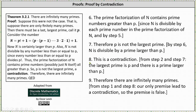Step eight: this is a contradiction from step two and step seven — the largest prime is p, and yet there is a prime larger than p. And finally, step nine: therefore there are infinitely many primes. From step one and step eight, our only premise led to a contradiction, so the premise is false.